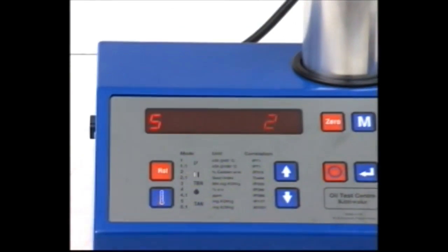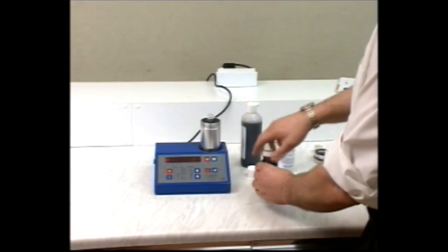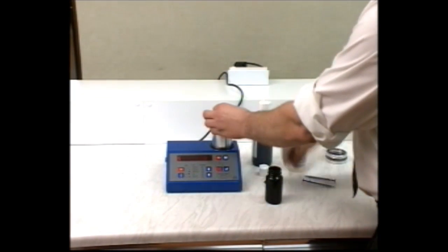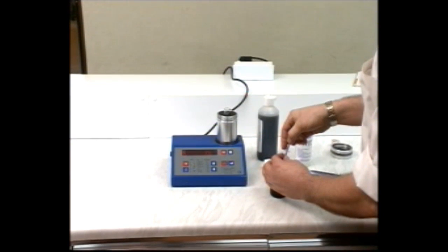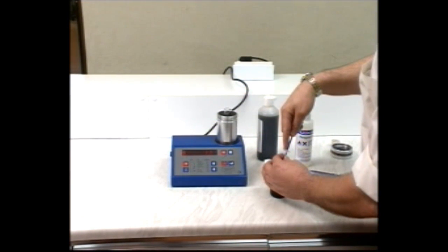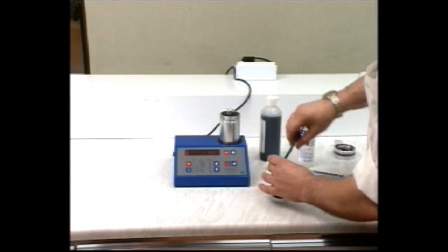Shake the oil sample well. Remove one milliliter of oil with the syringe and add it to the TAN tube.